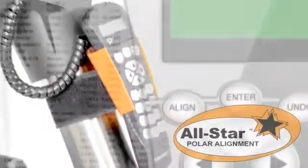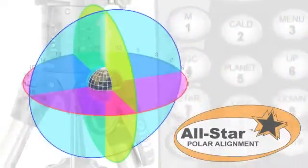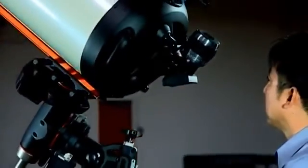All Star allows you to choose any bright star listed on the NexStar Hand Control to assist in accurately aligning your telescope's mount with either one of the celestial poles. Using the telescope's sync function, the mount is able to point and center a bright star with a high degree of accuracy.